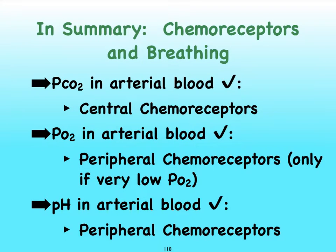To sum this all up, we looked at the three things that can change our breathing: the partial pressure of carbon dioxide, oxygen, and pH levels in our arterial blood. If the partial pressure of carbon dioxide changes in arterial blood, that CO2 can diffuse into the cerebrospinal fluid, and our central chemoreceptors can respond. Partial pressure of oxygen is usually not much of a problem unless it drops well below 60 mmHg — at that point our central chemoreceptors shut down and the peripheral chemoreceptors respond. When pH levels drop in arterial blood due to accumulating metabolic acids, the peripheral chemoreceptors influence our respiratory centers.